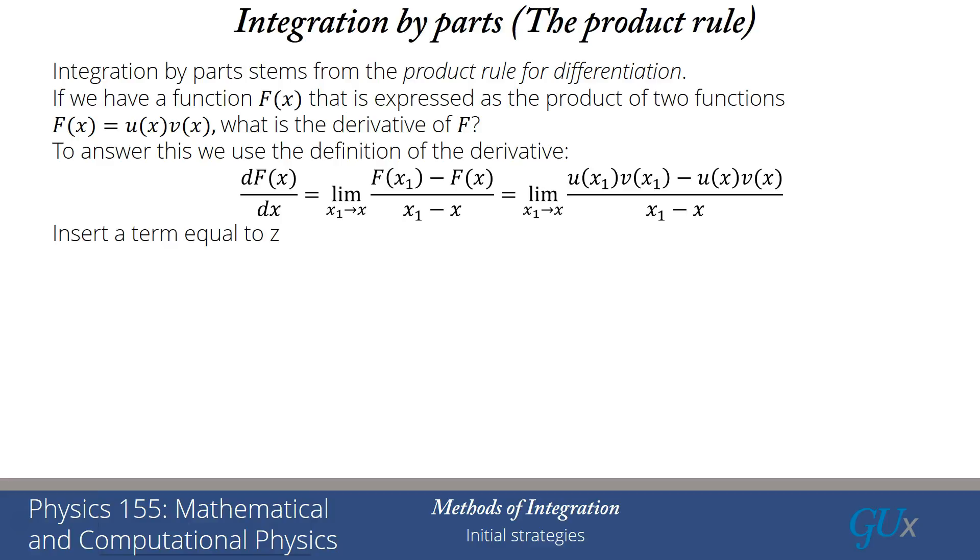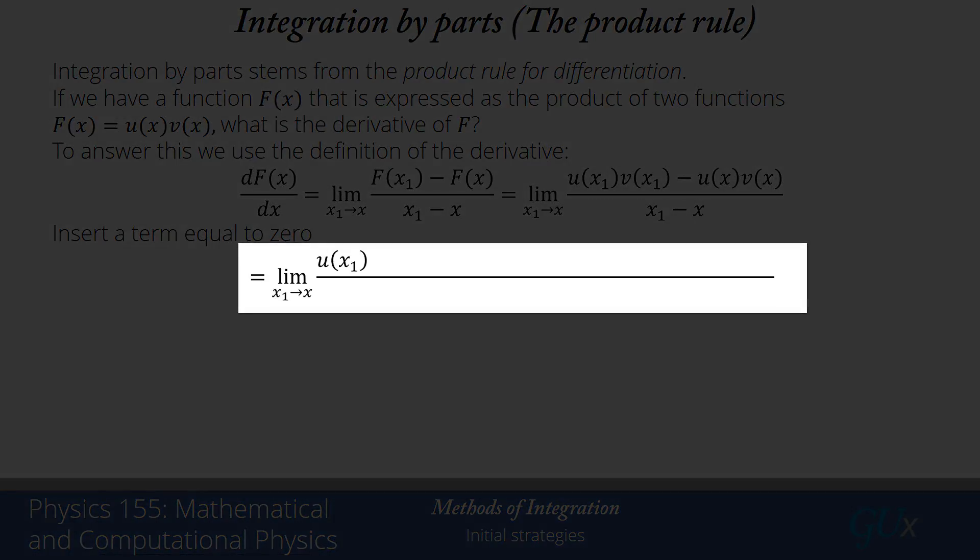In this case, the term that is equal to 0 that we're going to be adding is this term in red, which is equal to u(x)v(x₁) with the negative sign, plus u(x)v(x₁) with a positive sign.